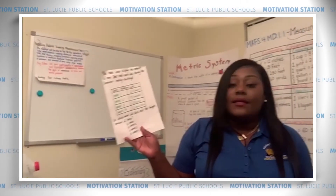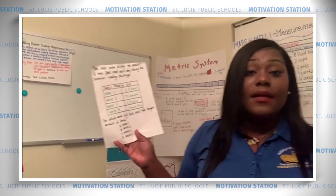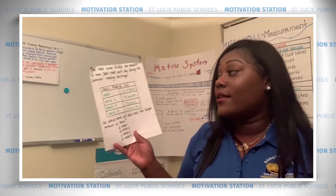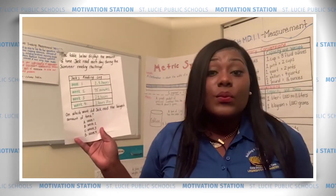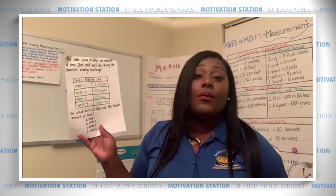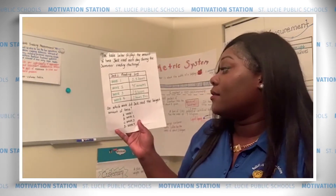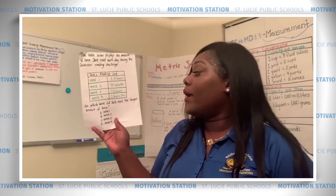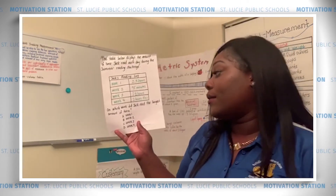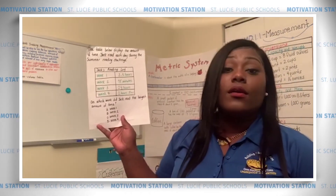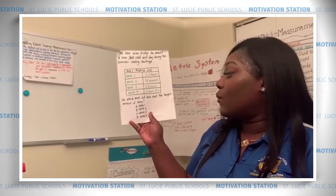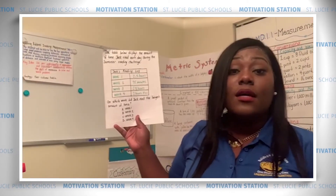The problem reads: the table below displays the amount of time Jack read each day during the summer reading challenge. Jack's reading log — Week 1: 2.5 hours; Week 2: 75 minutes; Week 3: two and a half hours; Week 4: two hours 35 minutes. On which week did Jack read the longest amount of time?